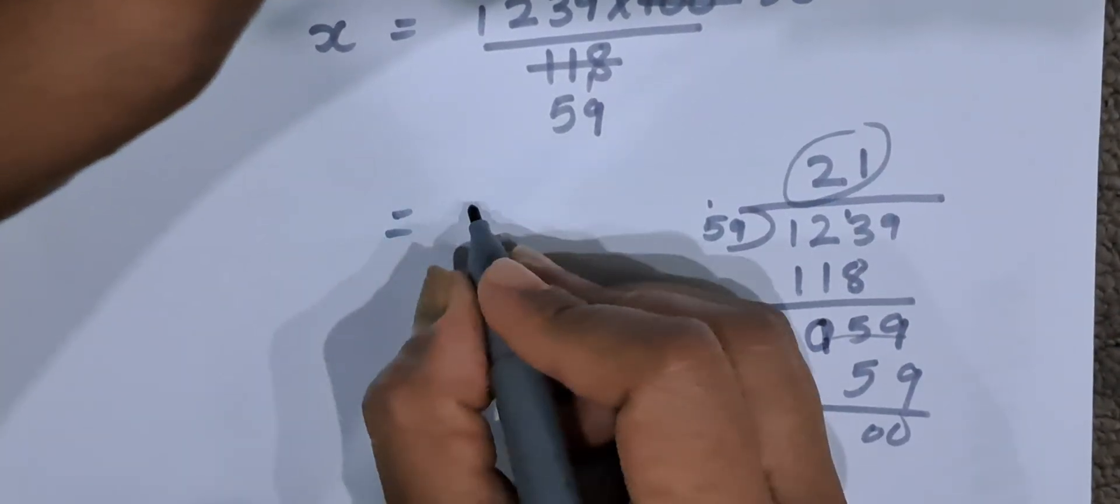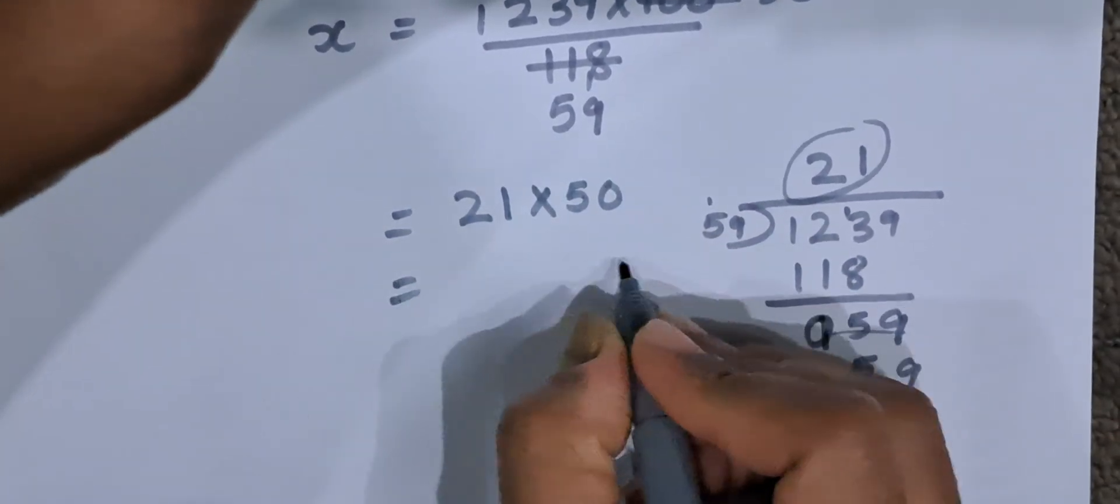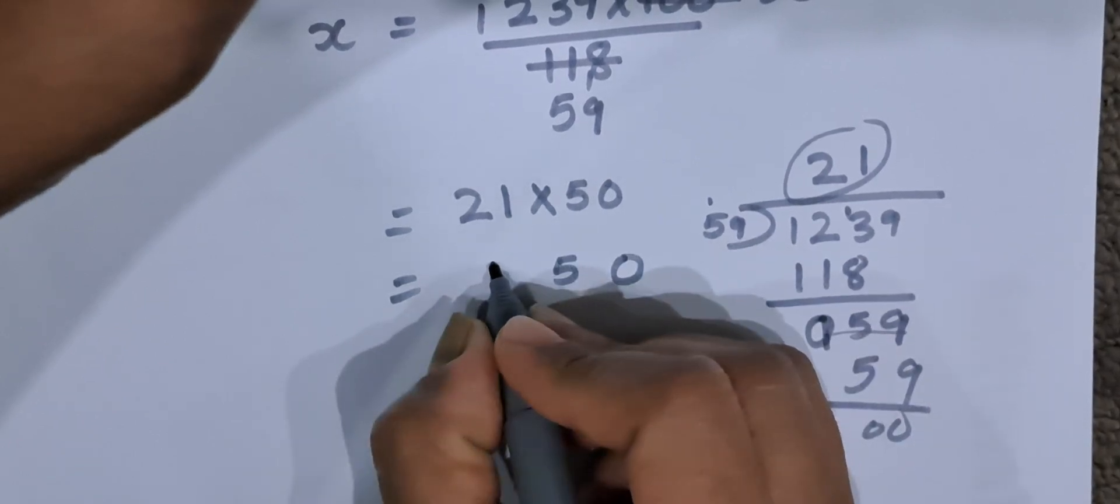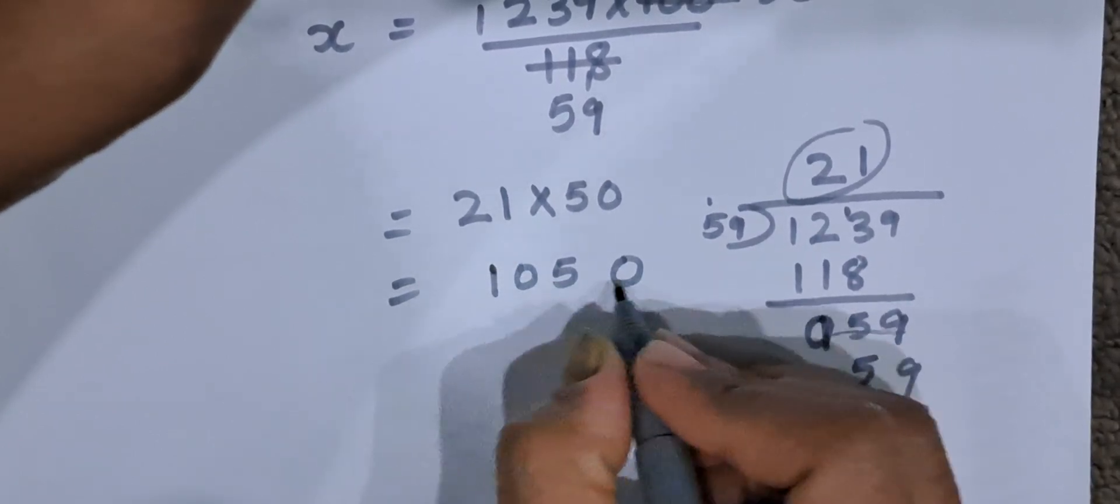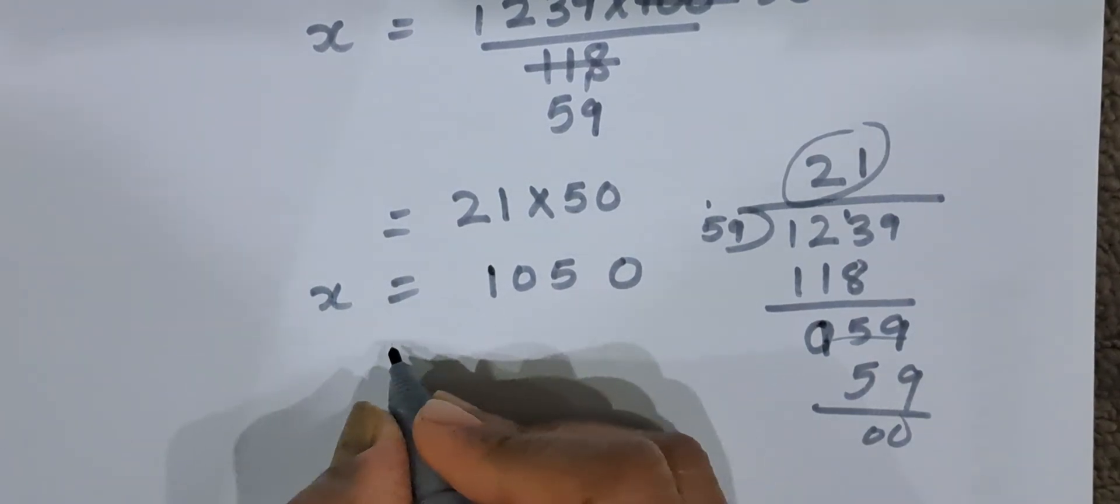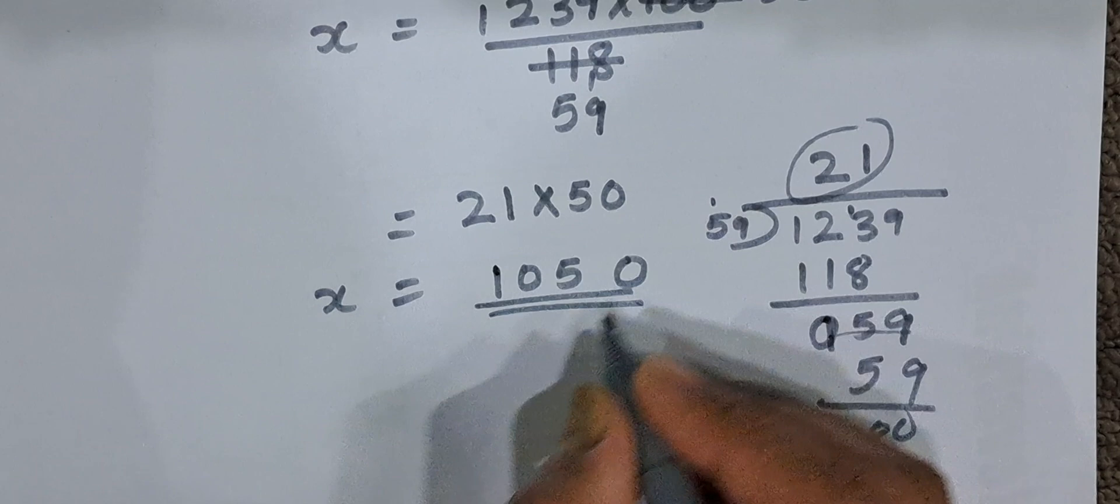That is 21 into 50 remains as it is. So 0, 5 times 1 is 5, 5 times 2 is 10. It is 1050. So the value of X will be 1050. That is the price of the article without the GST is 1050.